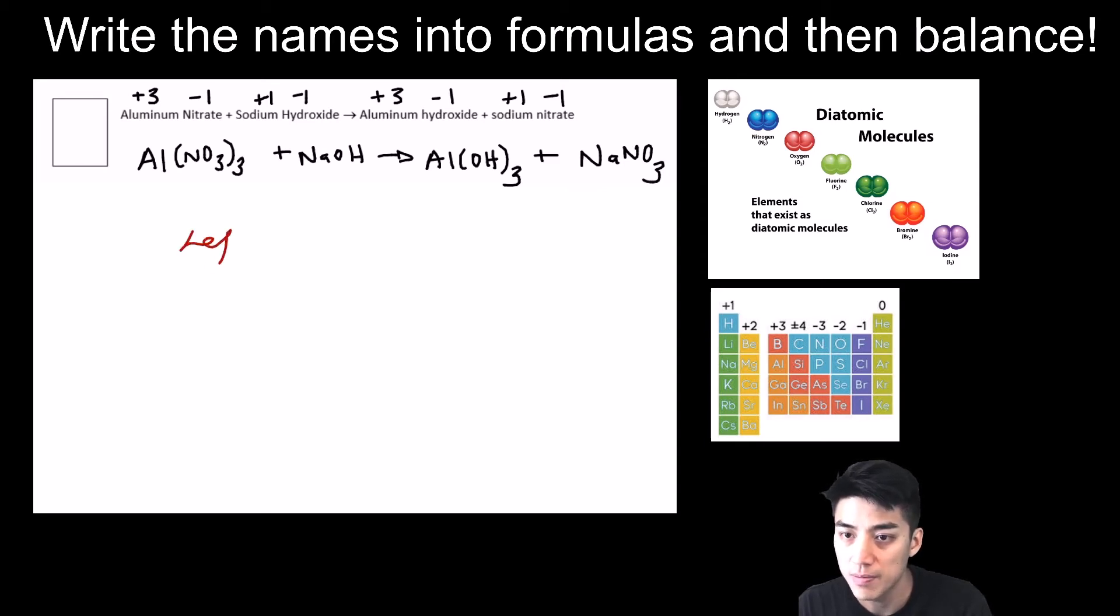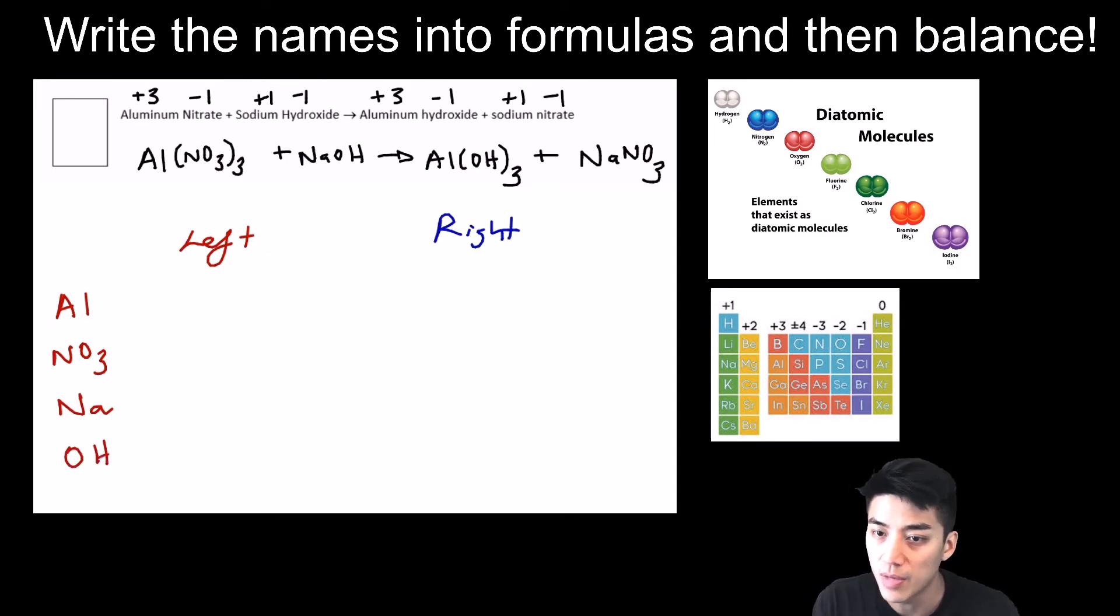Now we're going to try to balance by counting up what's on the left and what's on the right. Eventually you get to a point where you can do these in your head without having to show this work every single time. Some equations are easier than others to complete in your head, but I'm just going to write out all the steps. On the left side, I see 1 aluminum, 3 sets of nitrate, 1 sodium, 1 hydroxide. Again, hydroxide is a polyatomic, so it's better to keep them together in the parentheses. We're going to count up what's on the right.